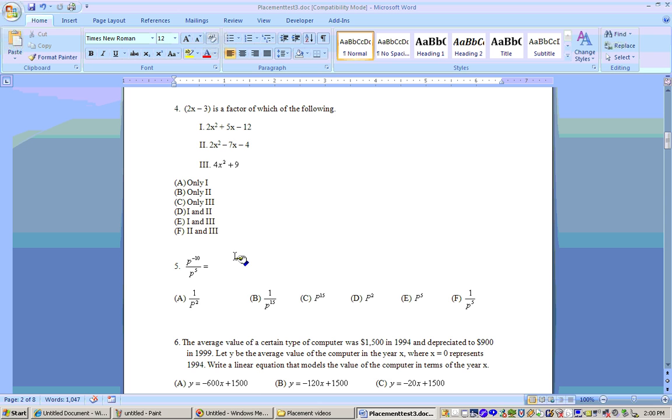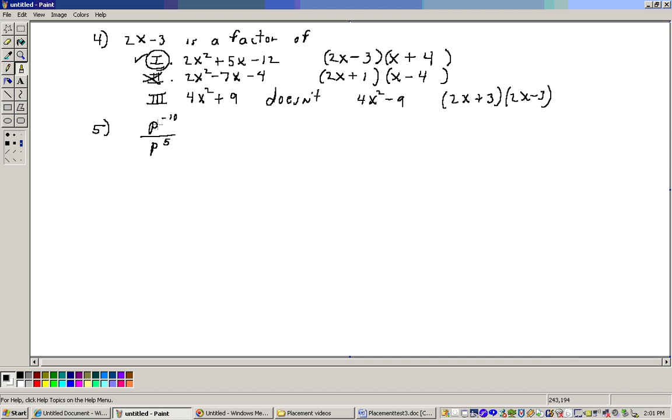Let's go to problem 5. Problem 5 says p to the negative 10 over p to the fifth. What you need to know is that negative exponents reciprocate the base. Instead of p being in the numerator, it's going to be in the denominator. That gives us 1 on top. On the bottom, I have p to the fifth, and when I reciprocate this, it becomes p to the positive 10th. When you multiply, you add your exponents together, and we get 15. So it's 1 over p to the 15th, which is answer B.